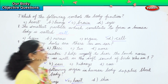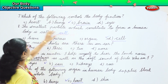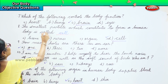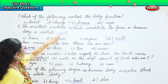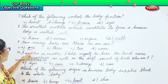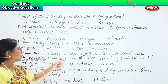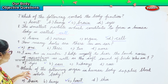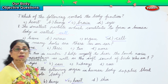Now let's read through all the answers once. Which of the following controls the body function? Brain. The smallest particle which constitutes to form a human body is called cell. How many holes are there in an ear? We have only one hole in one ear. I am two in number, I help myself to hear the loud noise of the airplane as well as the soft sound of the birds — I am an ear. Which of the following organ in the human body supplies blood to the whole body? Heart. Heart supplies blood to the whole body.